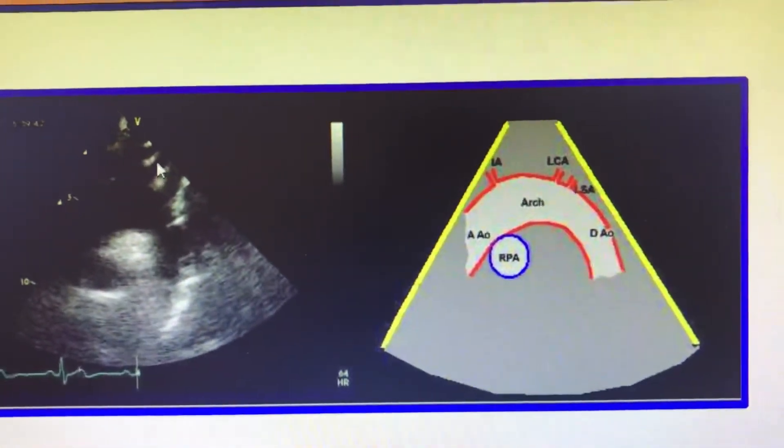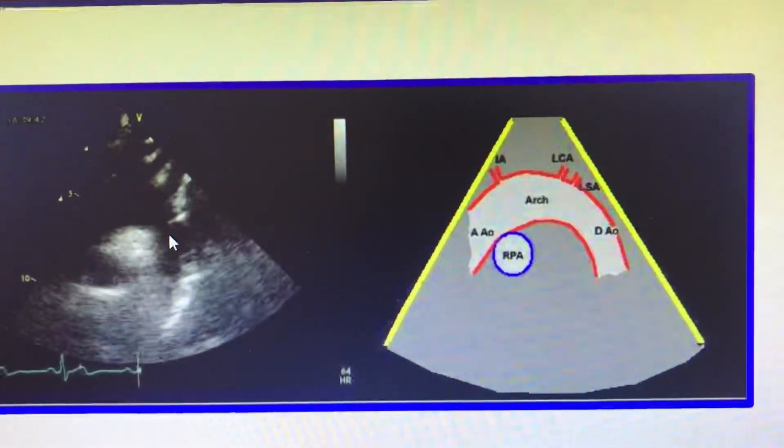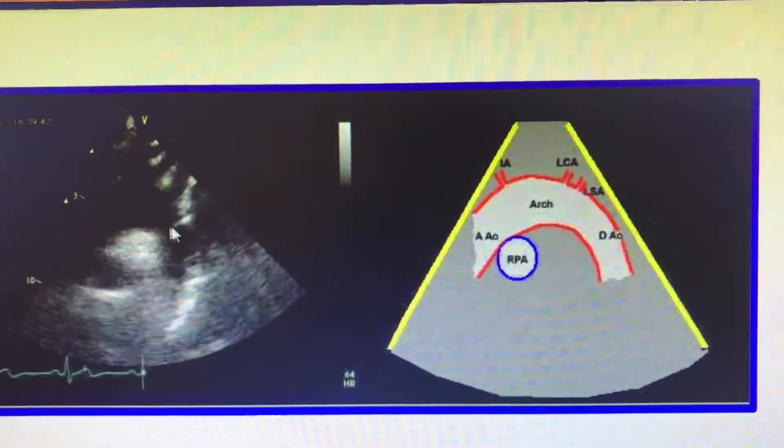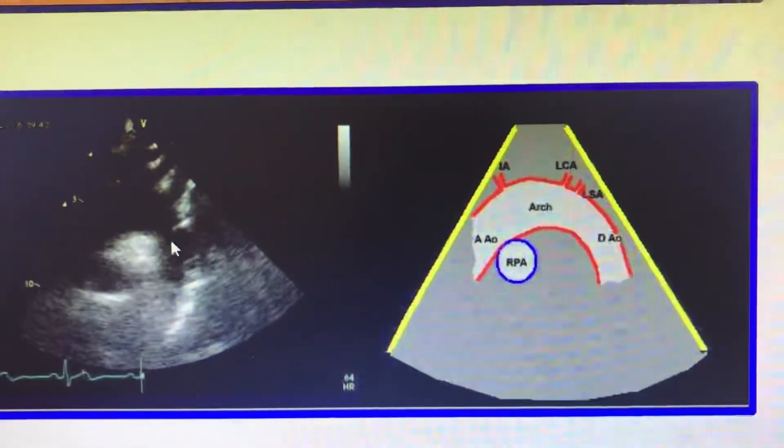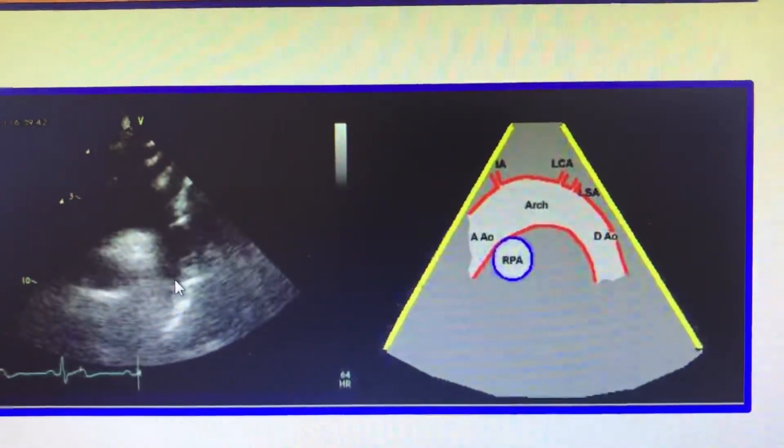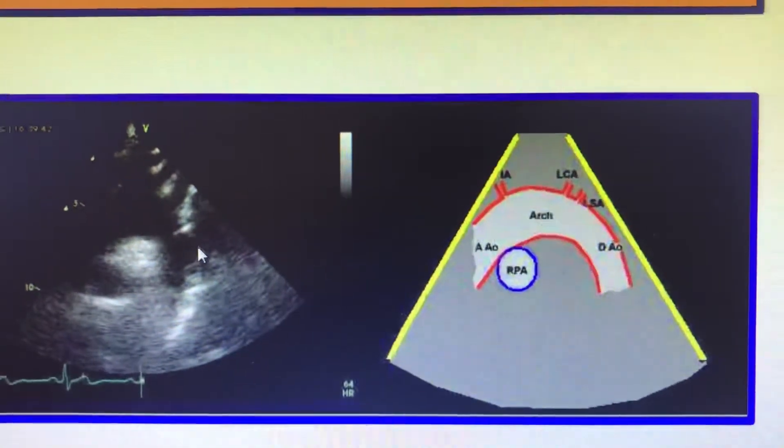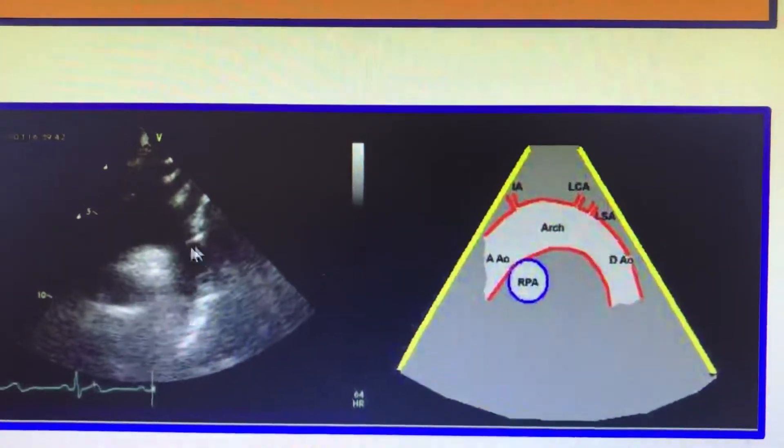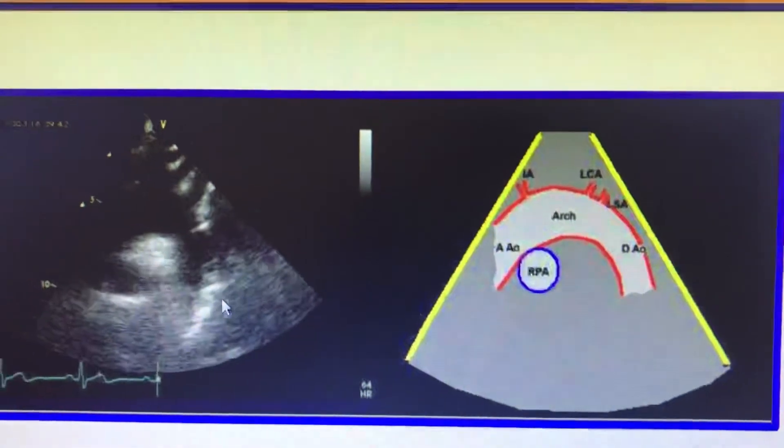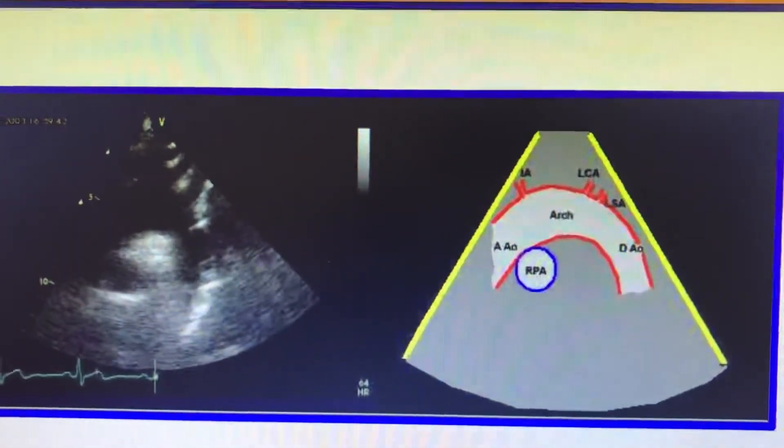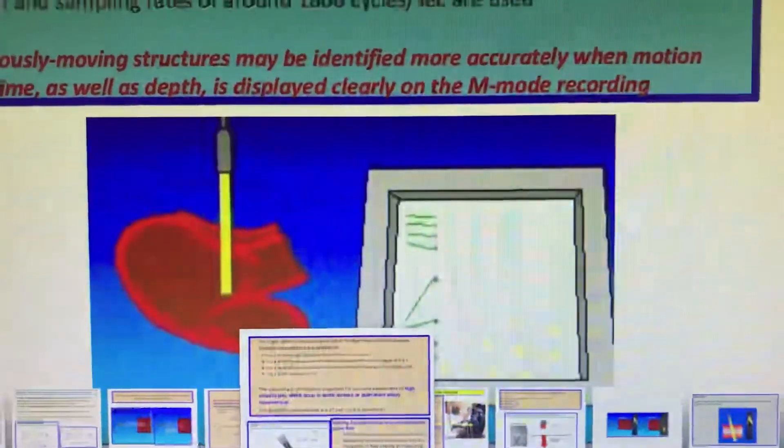If you put the Doppler here and take the continuous pressure gradients, you can assess the turbulence. With color Doppler, turbulence will be there, and you can record the continuous pressure gradients. If it is more than 20 to 25 millimeters, then interventions may help relieve the pressure the LV is under. Thank you.